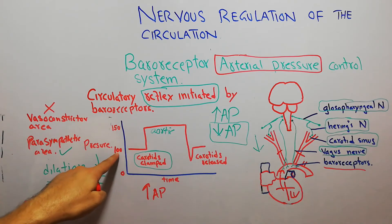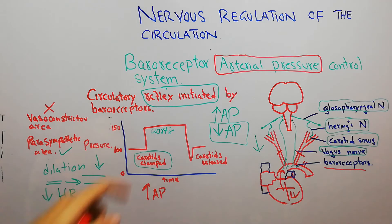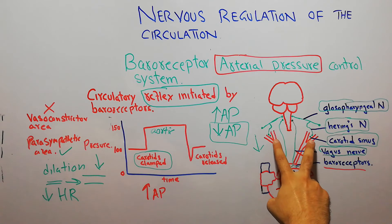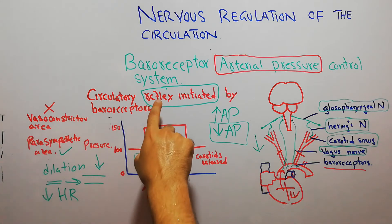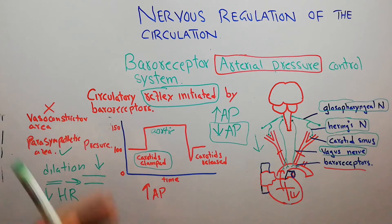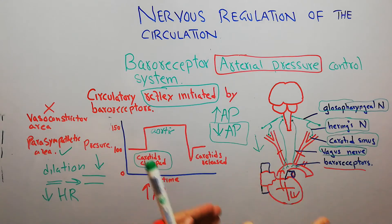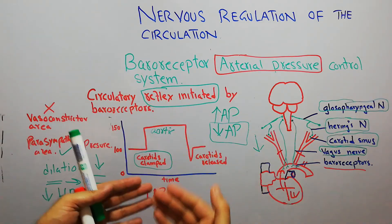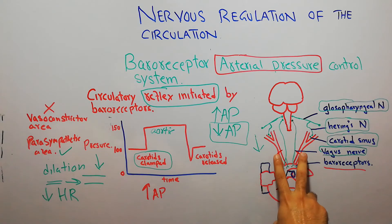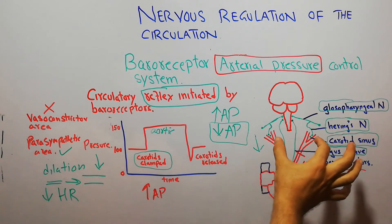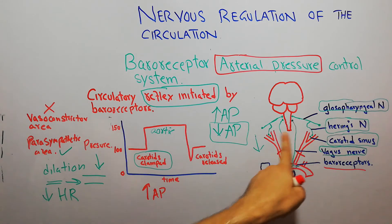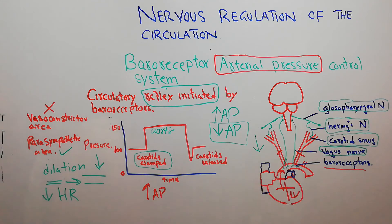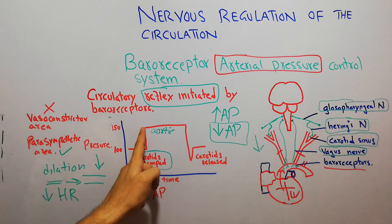The aortic pressure increases from the normal of 100 mmHg to around 150 mmHg, because pressure has been decreased at the level of the carotid sinus. The baroreceptors are initiating a reflex which will bring back the pressure. The main purpose of baroreceptors is to decrease pressure when it is increasing and to increase pressure when it is decreasing. So when the carotid arteries are clamped, the baroreceptors detect a fall in pressure and initiate a reflex which leads to increased pressure in the aorta, rising to around 150 mmHg.